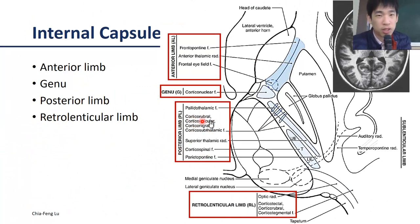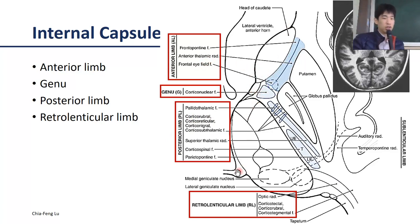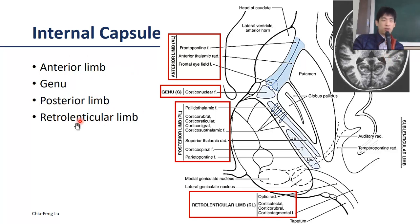The posterior limb is particularly important, while the anterior limb controls other functions. To summarize the internal capsule structure, you need to remember at least the anterior limb, genu, posterior limb, and the most distal part called the retrolenticular limb.